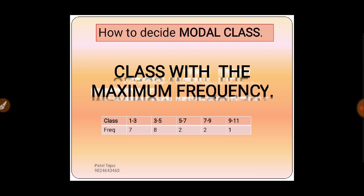Let's clarify with an example. We have a table with class intervals 1–3, 3–5, 5–7, 7–9, 9–11 and frequencies 7, 8, 2, 2, 1 respectively. The class with the maximum frequency — here 8 is the maximum — so 3–5 is our modal class. That is how we decide the modal class.